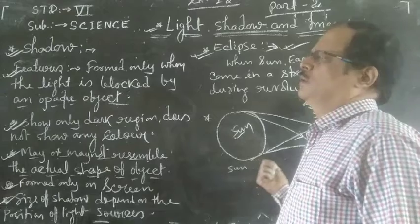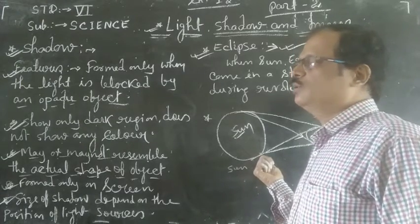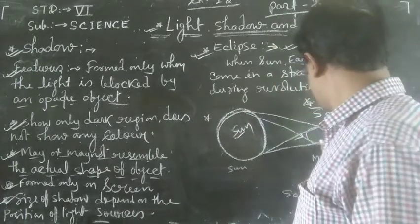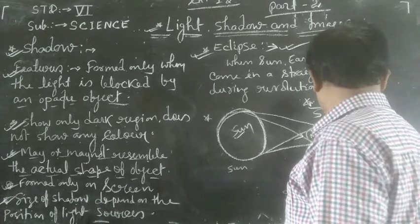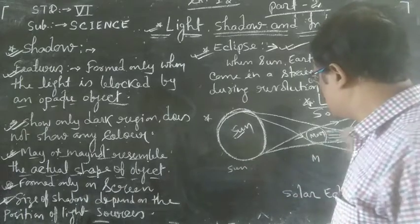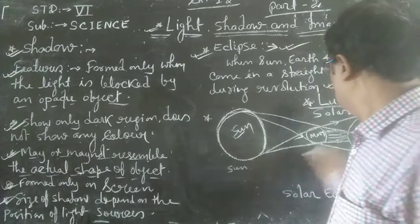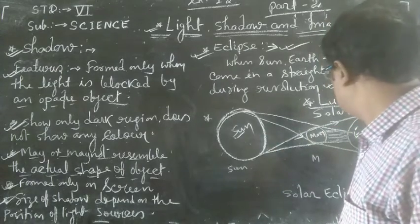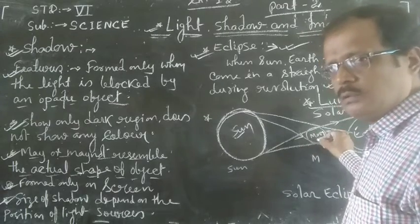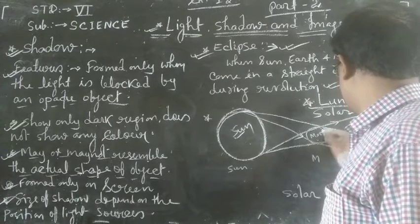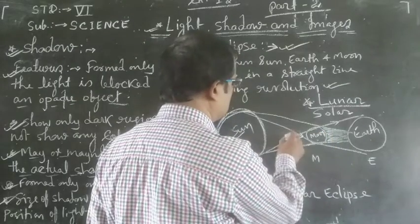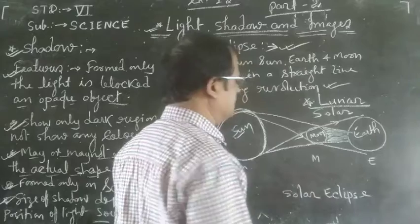We will first try to know about solar eclipse. Looking at the figure: there is the sun, which is a star, then the moon, and then the earth. During revolution, they all sometimes come in a straight line. When the moon comes between the sun and the earth during revolution, the light coming from the sun is blocked by the opaque object — the moon — and does not reach the earth's surface. This condition is called solar eclipse. Similarly, the opposite condition is called lunar eclipse.